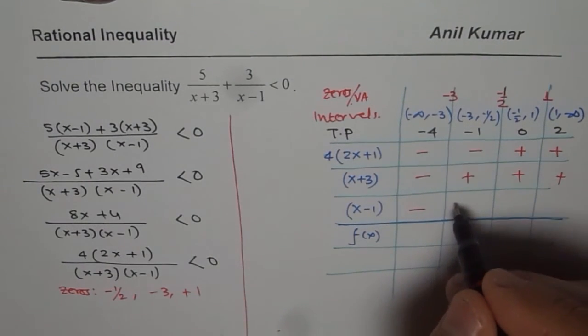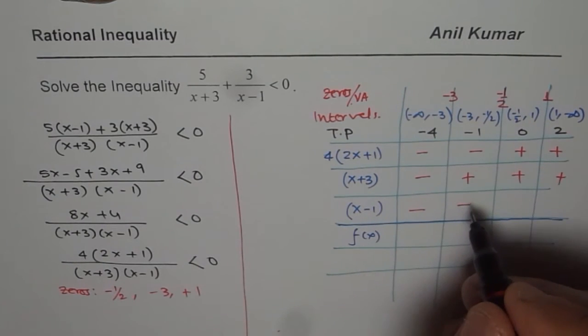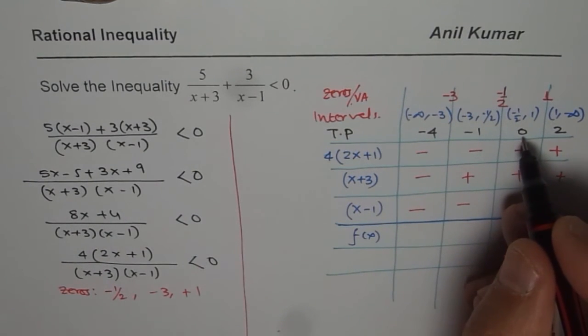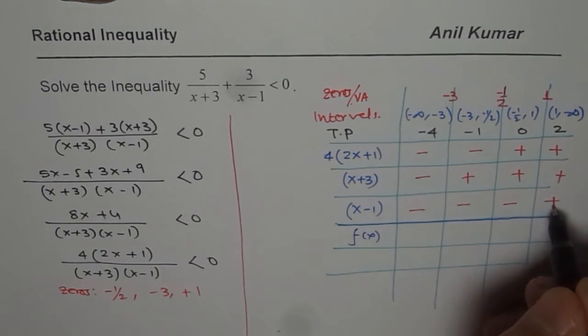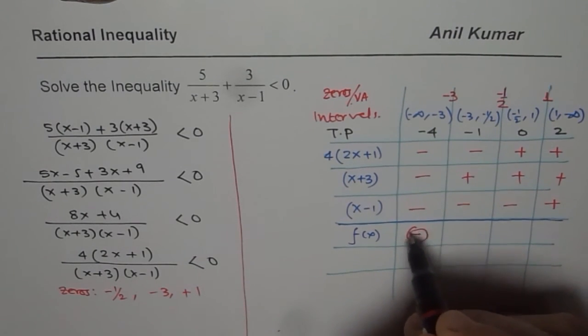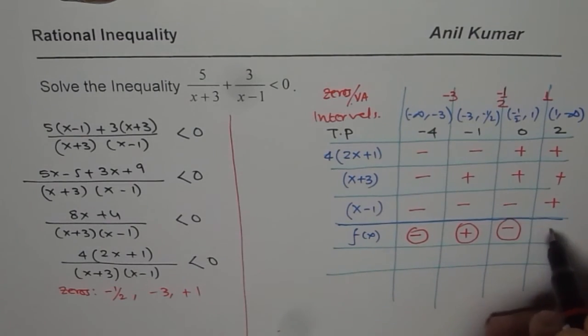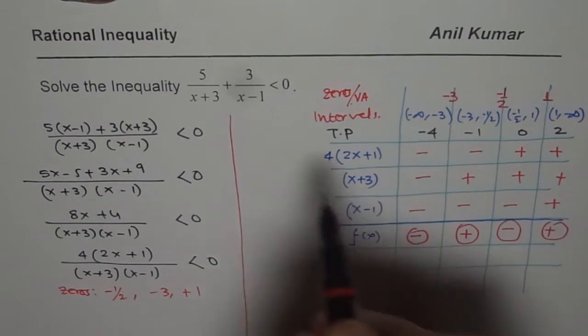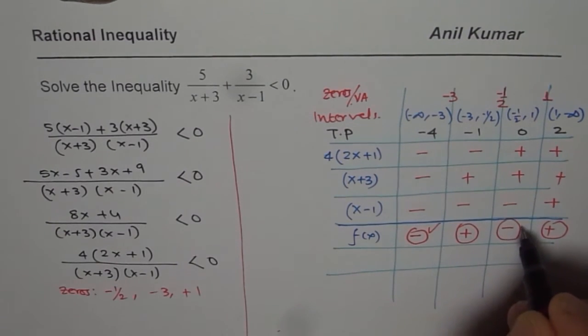Minus 4, negative. Minus 1, negative. We are substituting for x. 0 in this case will give us negative and then 2 will give us positive. Now, 3 negatives means a negative. 2 negatives means a positive. 1 negative means negative. 3 positives means positive.